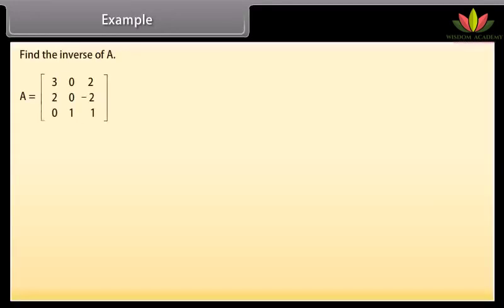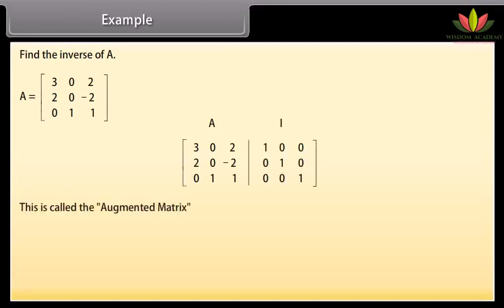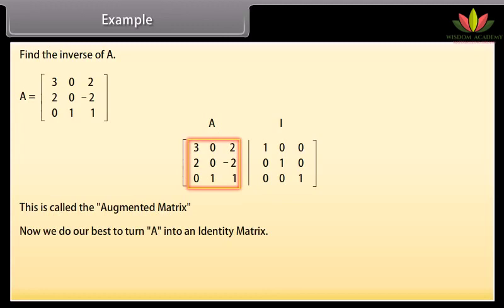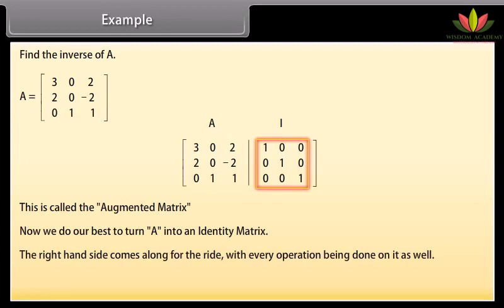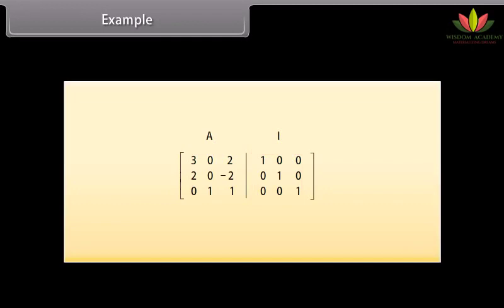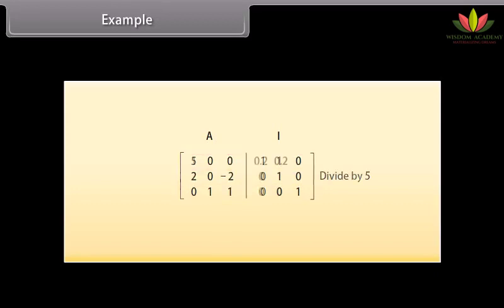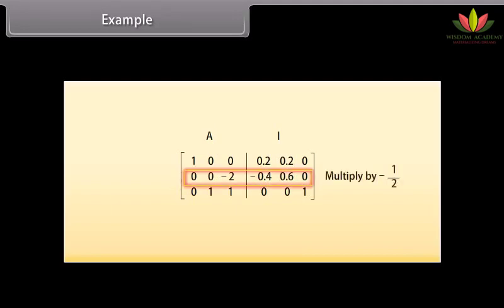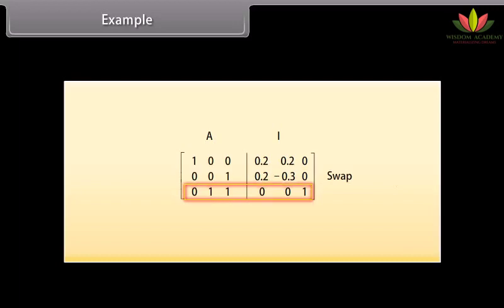Example: Find the inverse of A. We start with matrix A and write it down with an identity matrix I next to it — this is called the augmented matrix. We do our best to turn A into an identity matrix; the right-hand side comes along with every operation. We can only do elementary row operations and must do them to the whole row. First step: add row 2 to row 1. Then divide row 1 by 5. Then take two times the first row and subtract it from the second row. Multiply second row by −1/2. Now swap the second and third row. Last, subtract the third row from the second row. And we are done.